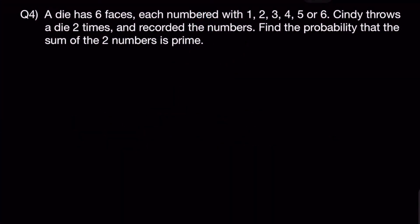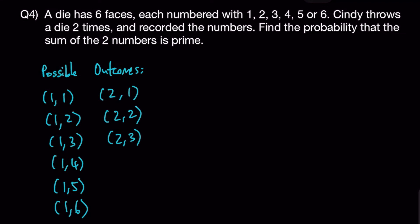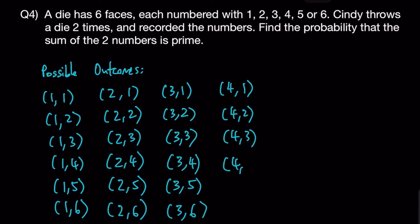Let's look at question 4 — a probability question. A die has six faces numbered 1 through 6. Simi throws the die two times and records the numbers. We need to find the probability that the sum of the two numbers is prime. We should first list all possible outcomes to ensure none are missed, giving a total of 36 cases.